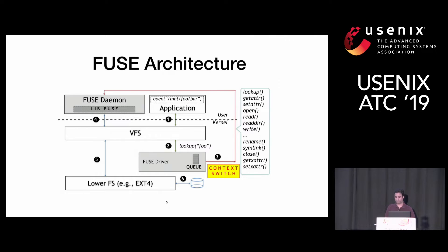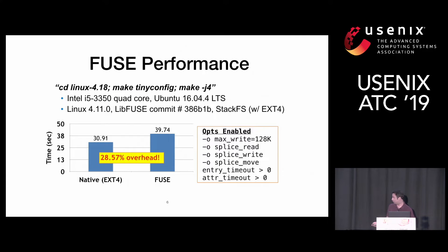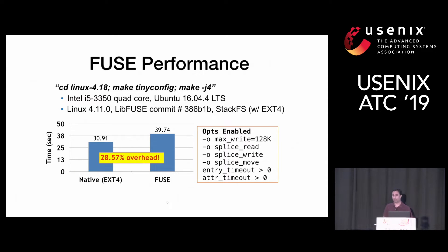Let's evaluate the performance of Fuse using a kernel compilation workload. I'm compiling Linux 4.18 on an Intel quad-core machine, using optimized Fuse with various optimizations — for example, non-zero entry timeout and attribute timeout allow the Fuse framework to leverage VFS caches and reduce the number of requests delivered to user space. I'm using a simple stackable Fuse file system. The graph shows measured time in seconds on the y-axis, comparing ext4 and Fuse on the x-axis. As you can see, it incurs a very high overhead. Let's delve deeper to understand why, despite optimizations, Fuse still incurs high overhead.